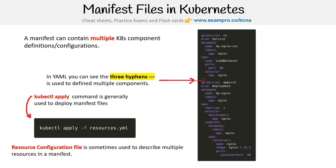"Resource configuration files" is sometimes used to describe multiple resources in a manifest file, which is confusing, because manifest by definition means an itemized list of multiple things. But that's just the terminology throughout the documentation and throughout the ecosystem — I just wanted to clear that up for you.